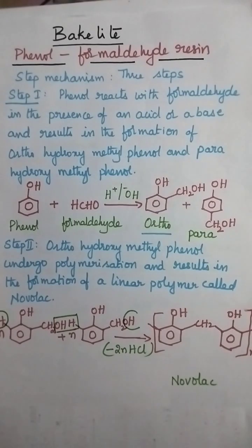Bakelite is also known as phenol formaldehyde resin, which is a thermoset plastic. It can be prepared by condensation polymerization.